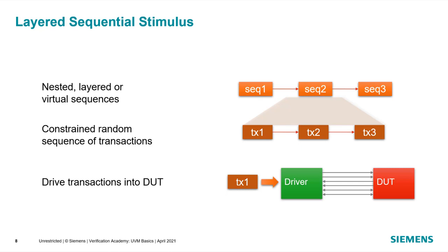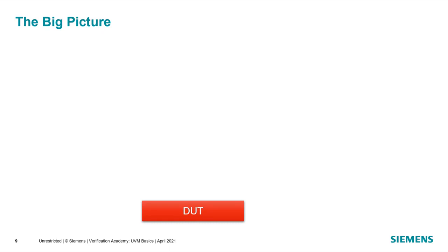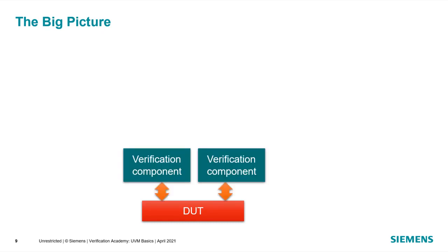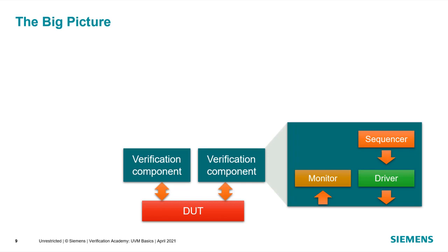Looking at the big picture of a verification environment: we have the DUT, and a set of verification components whose job it is to communicate with the DUT — we call these agents. Inside an agent there are three specific components: a sequencer, which executes and arbitrates across multiple sequences; a driver, which communicates at the pin level to the DUT; and a monitor, which looks at that same pin-level interface, recognizes pin-level activity as transactions, and communicates those transactions out to the rest of the environment.